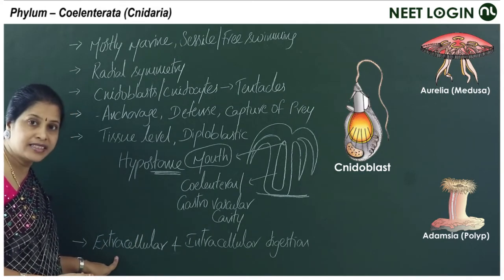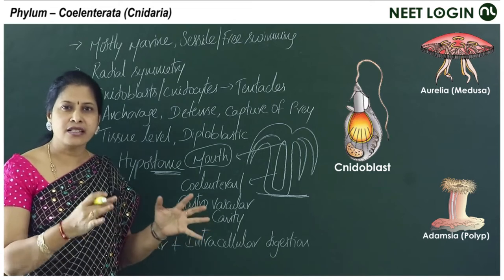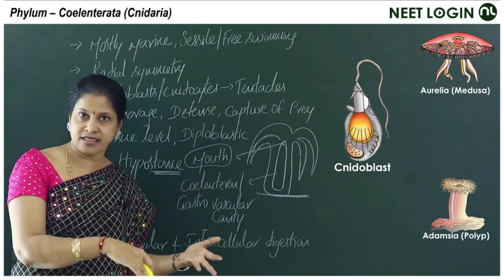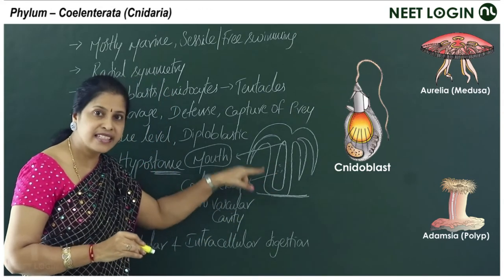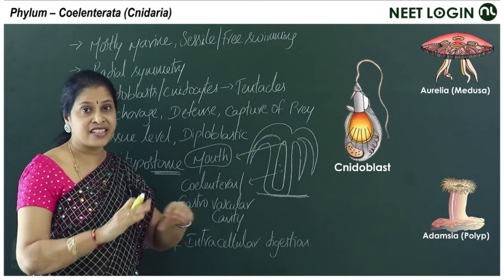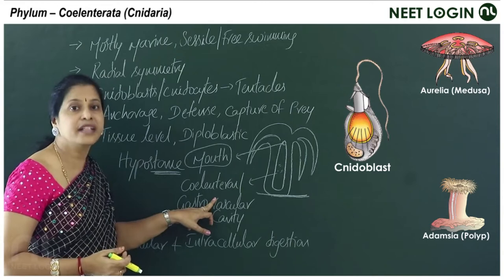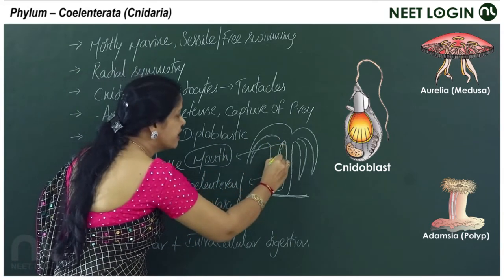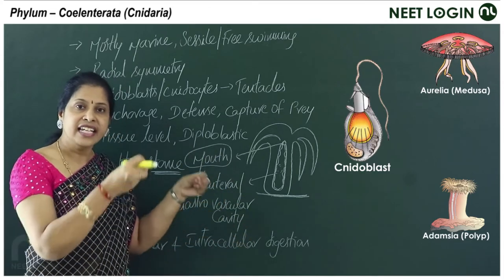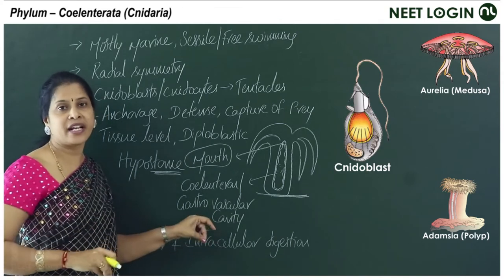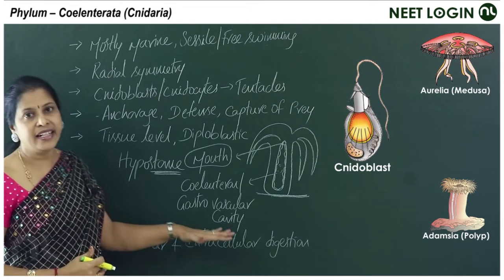Cnidarians show both extracellular and intracellular digestion. If digestion occurs outside the cell — in the cavity like the coelenteron — it is extracellular digestion. If the food is digested in the cells lining the gut, the endodermal cells, it is intracellular digestion. Both types of digestion occur in cnidarians.